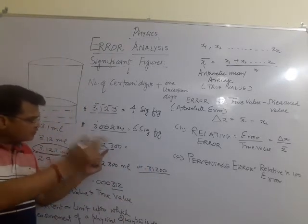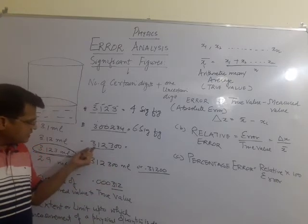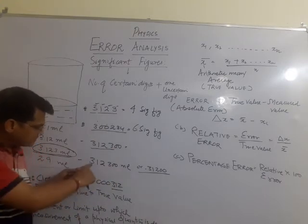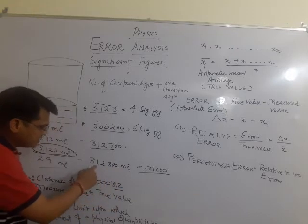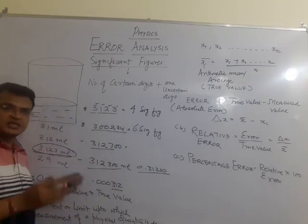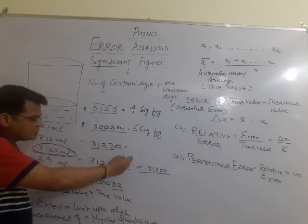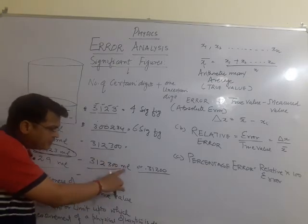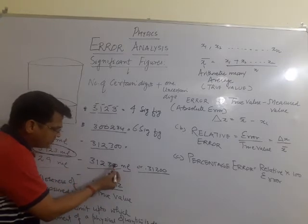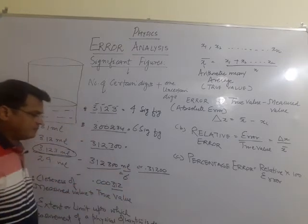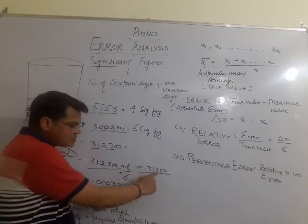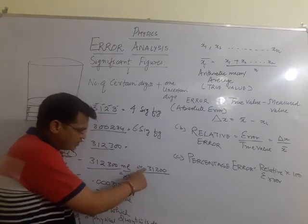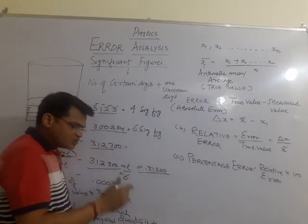All the zeros to the right of a non-zero digit without a decimal are not significant. For example, in 312300 with no unit or decimal measurement, all digits may be considered significant if a unit like milliliter or centimeter is specified. The next rule: all the zeros to the right of a decimal point and to the right of a non-zero digit are considered significant.